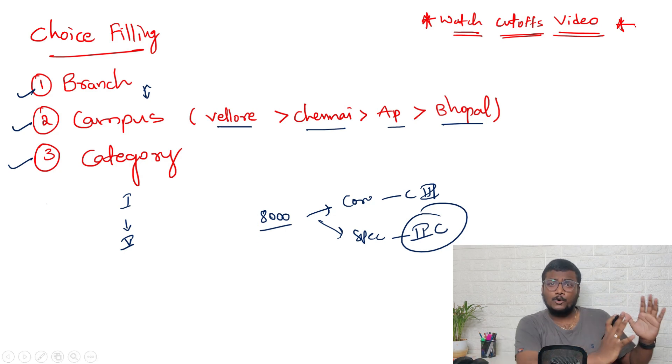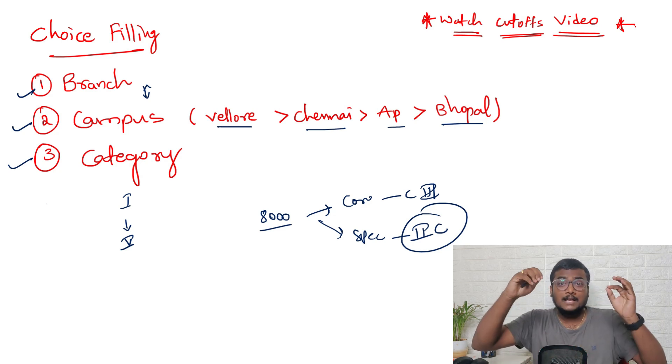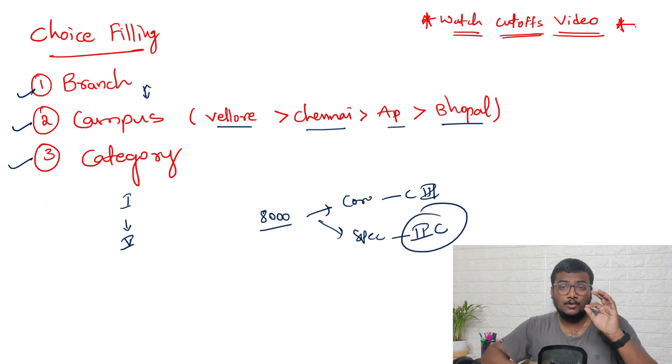Don't just go for core, core, core or AI-ML, AI-ML, AI-ML. Each and every specialization will be really good and each will have opportunities in the future. I have made a separate video regarding CSE core versus specialization - what is the difference between core and specialization.